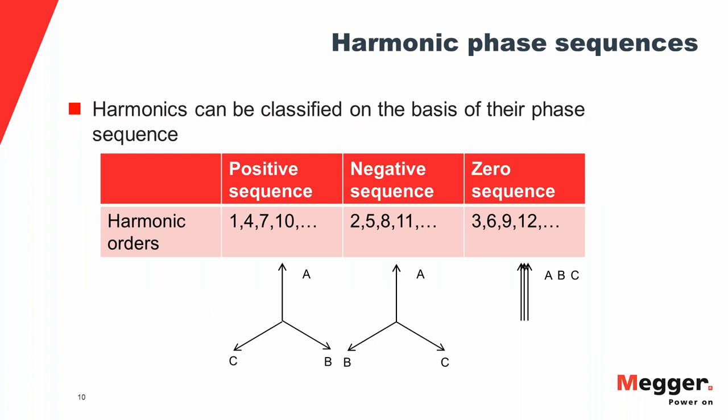Harmonics can also be classified by their phase sequence, which refers to the phase relationship between the three phases in a three-phase system. In a positive sequence system, B lags A by 120 degrees and C lags B by 120 degrees — moving clockwise on the vector diagram from A to B to C. In a negative sequence system, B leads A by 120 degrees and C leads B — moving counterclockwise. In a zero sequence system, there is no phase difference; all three phases are in phase with each other.